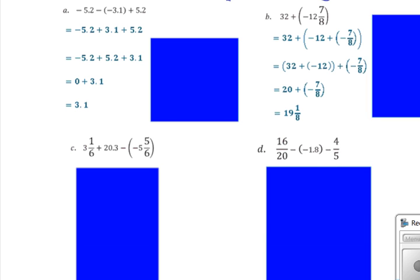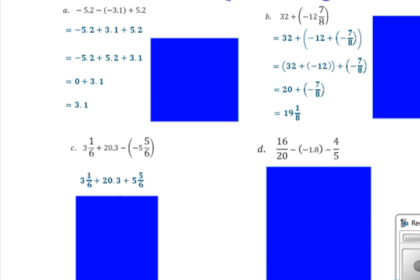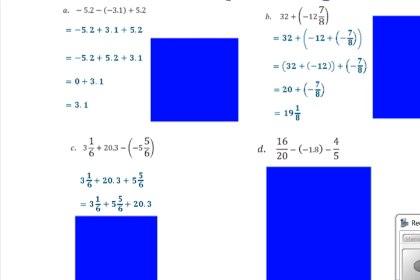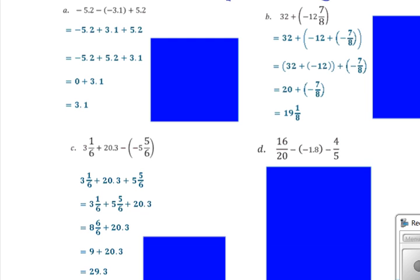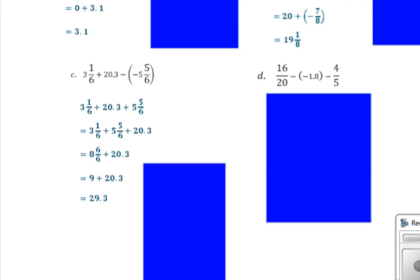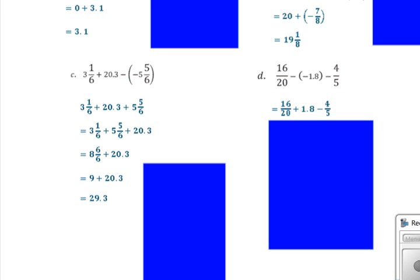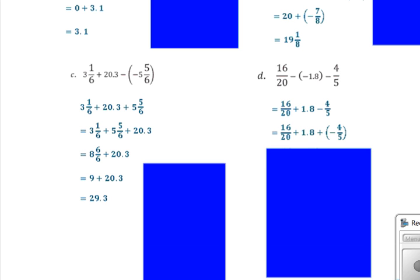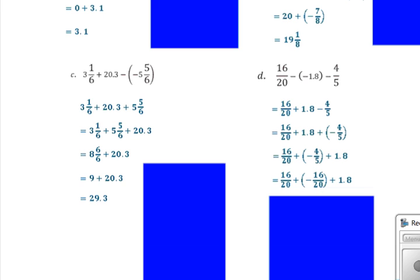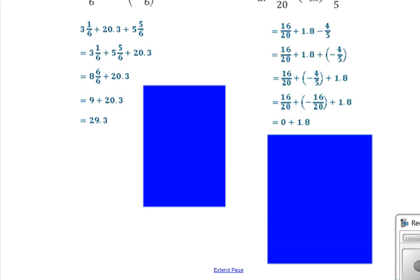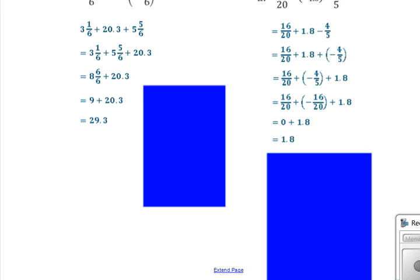Pause the video and try problem C. Subtracting a negative means adding a positive. Rewrite the problem putting fractions together — that is the associative property. 8 and 6 sixths equals 9. Combine your numbers to get a final answer of 29.3. Pause the video and try problem D. Minus a negative means plus a positive; subtracting means adding a negative. Regroup using the associative property and put fractions together. Rewrite with common denominators. A number and its opposite equals 0, and 0 plus 1.8 by the additive identity gives an answer of 1.8.